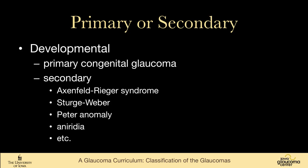In developmental glaucoma, you would divide it into primary congenital and then all the secondaries. Secondaries would include things like Axenfeld-Rieger syndrome, Sturge-Weber, Peters anomaly, aniridia, etc. We'll talk about all of these as we work through the curriculum.